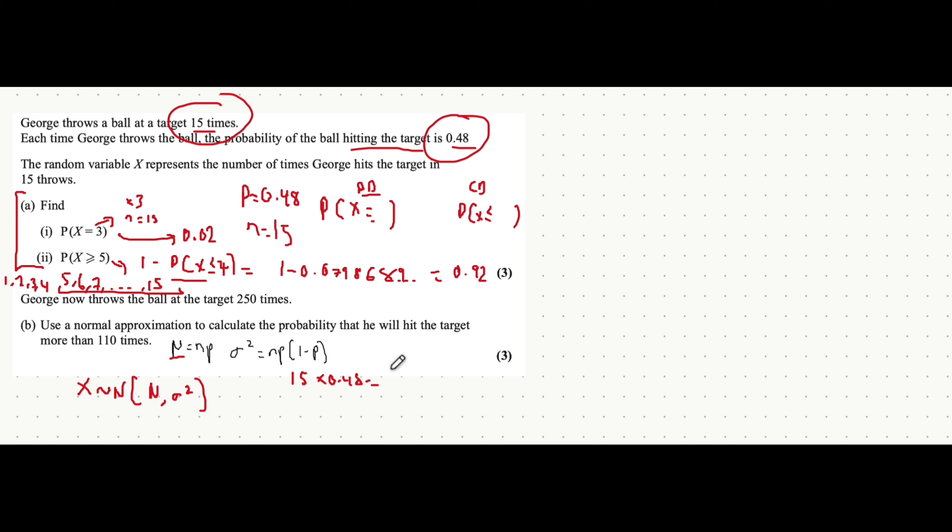Now, here, the mean would be 7.2 according to the calculator. And the variance would be np, which is basically just the mean, multiplied by 1 minus p, which is 1 minus 0.48. Carrying that out, you get 3.744.